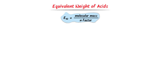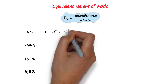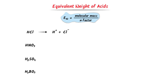We know that equivalent weight is equal to molecular weight upon N factor. For example, consider these acids. We will find the N factor of each acid, then we will calculate the equivalent weight of each acid. In case of HCl, it dissociates to hydrogen ion plus chlorine ion. HCl gives only 1 hydrogen ion, so its N factor is 1.